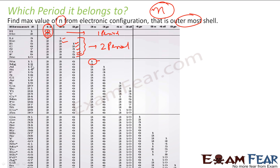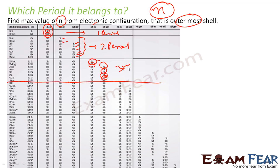For magnesium, the maximum n is 3 (3s). For aluminium, silicon, phosphorus, and sulfur, the outermost electrons are all in 3p, so the maximum is 3. For argon also the maximum is 3. So from sodium all the way through argon, the outermost electron is in the third shell, making all of these third period elements. But the moment you go to potassium, the maximum shifts to 4s.